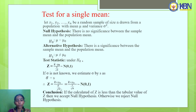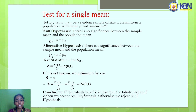For the conclusion, compare the calculated Z value with the tabular value of Z at α percent level of significance. If the calculated value of Z is less than the tabular value, accept the null hypothesis; otherwise reject the null hypothesis.